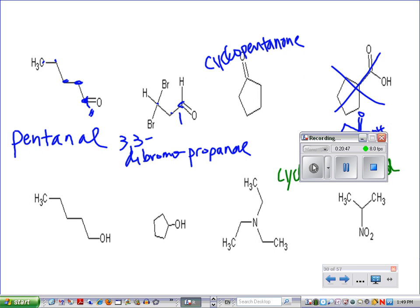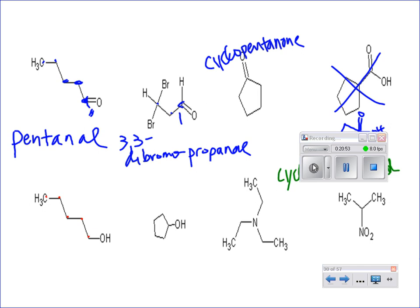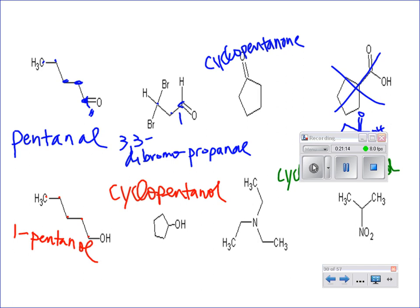Next family: alcohol. One, two, three, four, five carbons — pentanol — specifically 1-pentanol. Then cyclopentanol. The next one is ethyl methyl ether. And the last: 2-nitropropane.